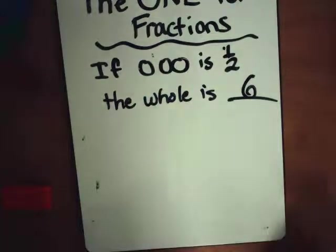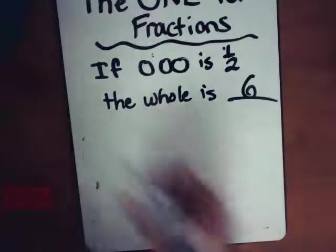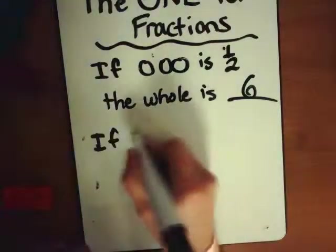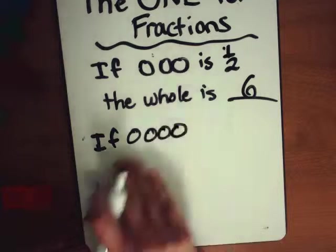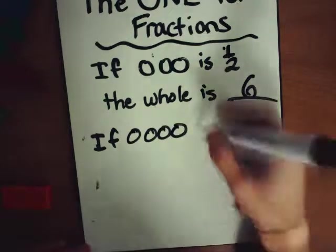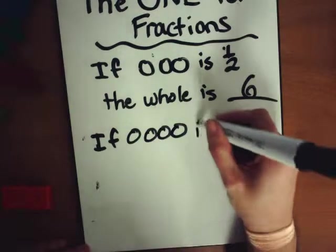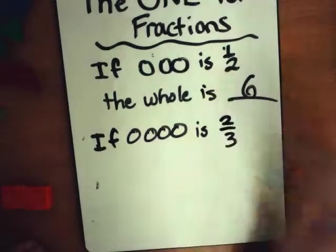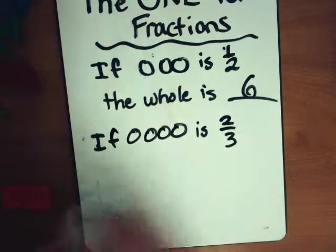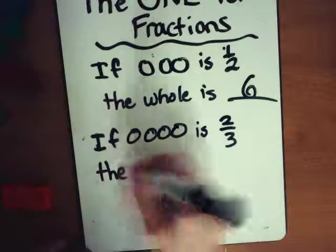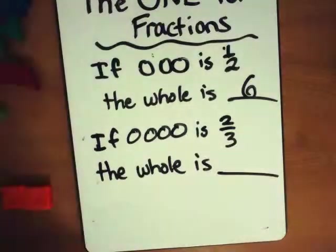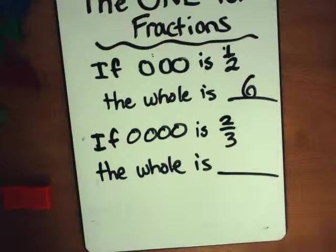Okay, so let's do one more. If four counters, or four circles, is two-thirds, then the whole is how many? How many is the whole broken into? Thirds, right?